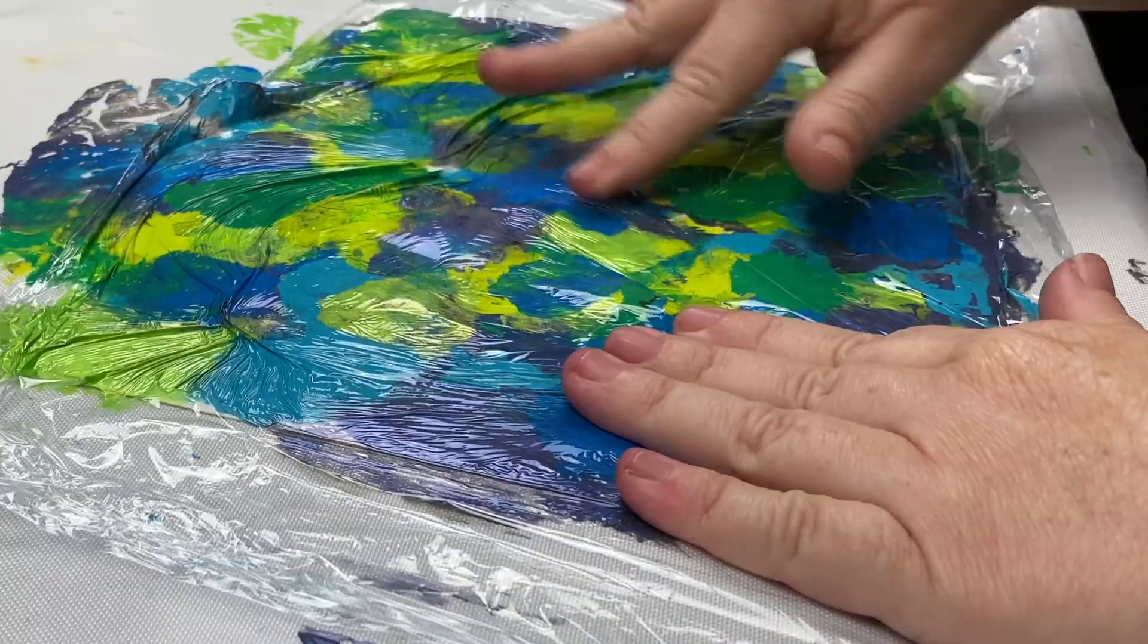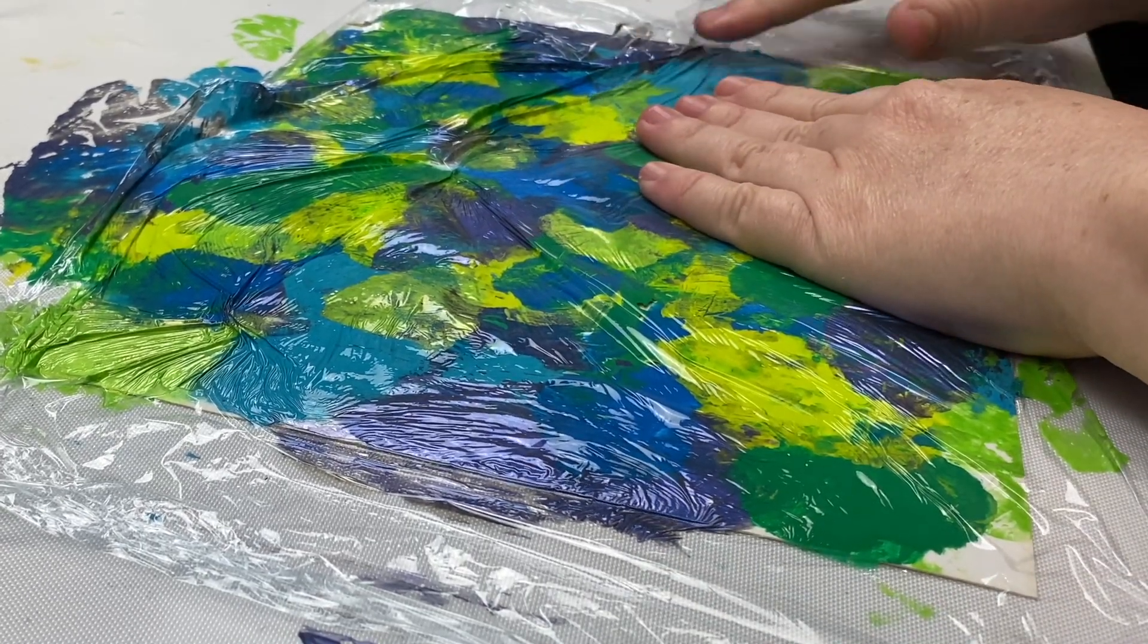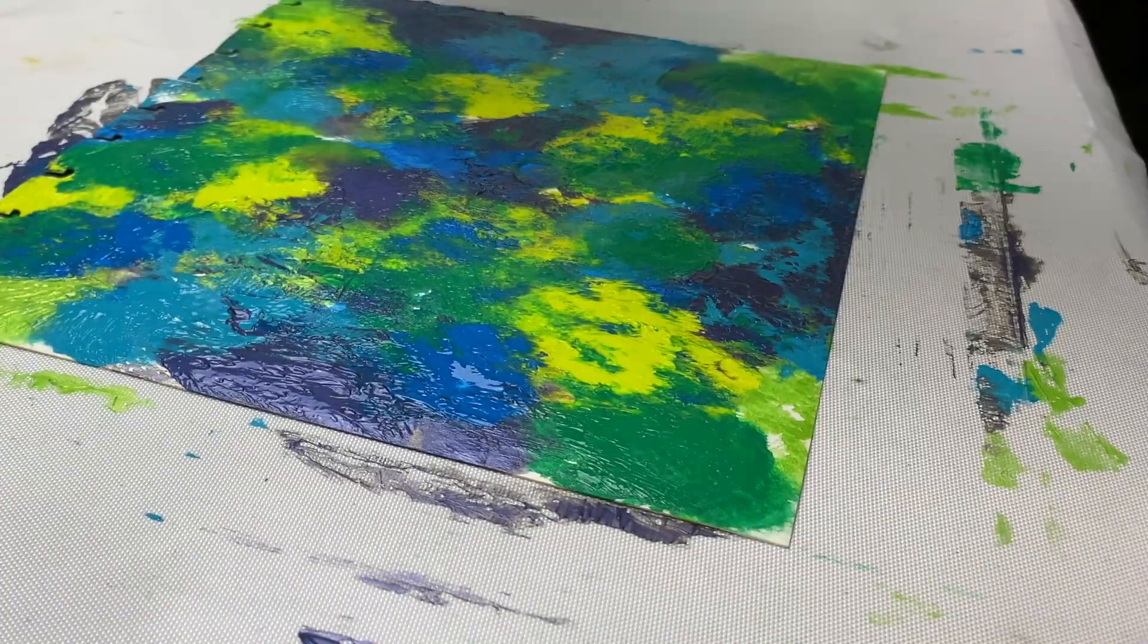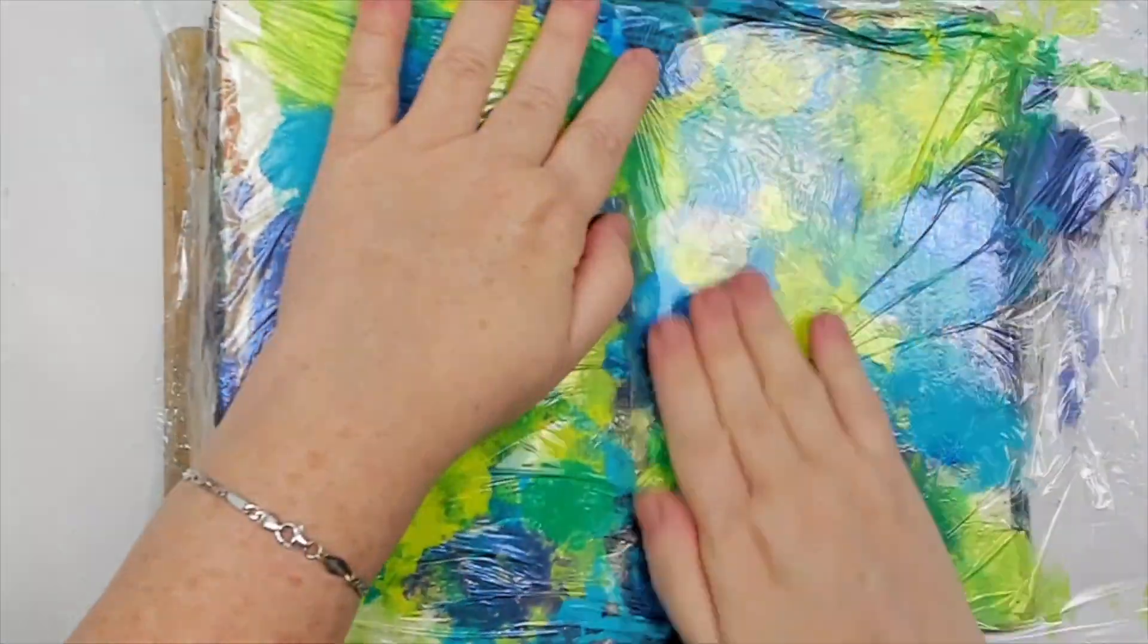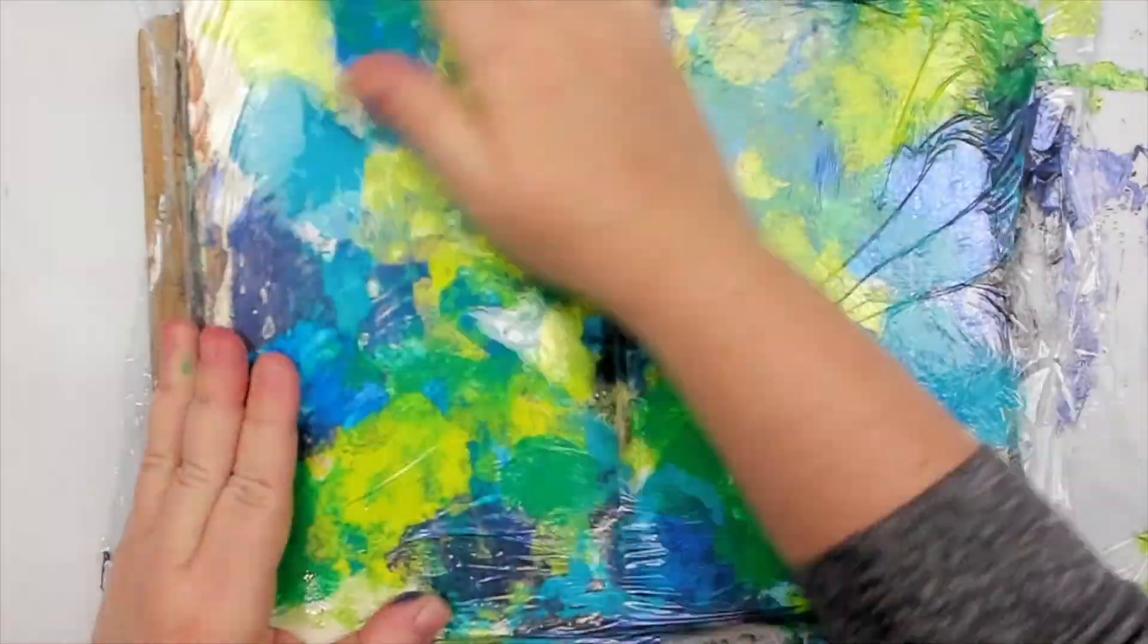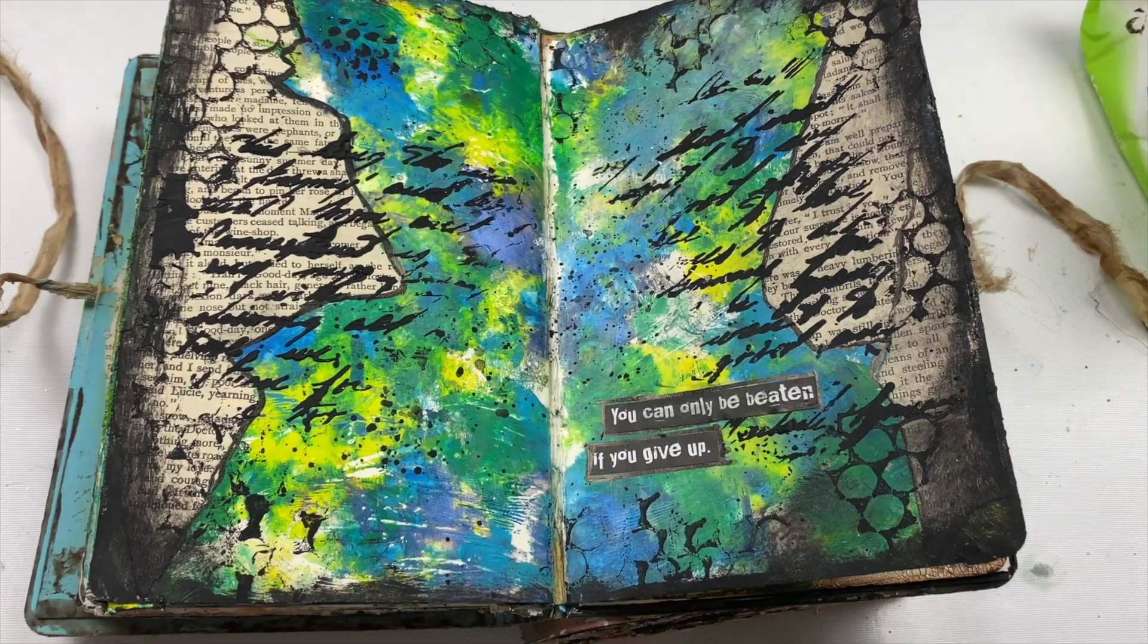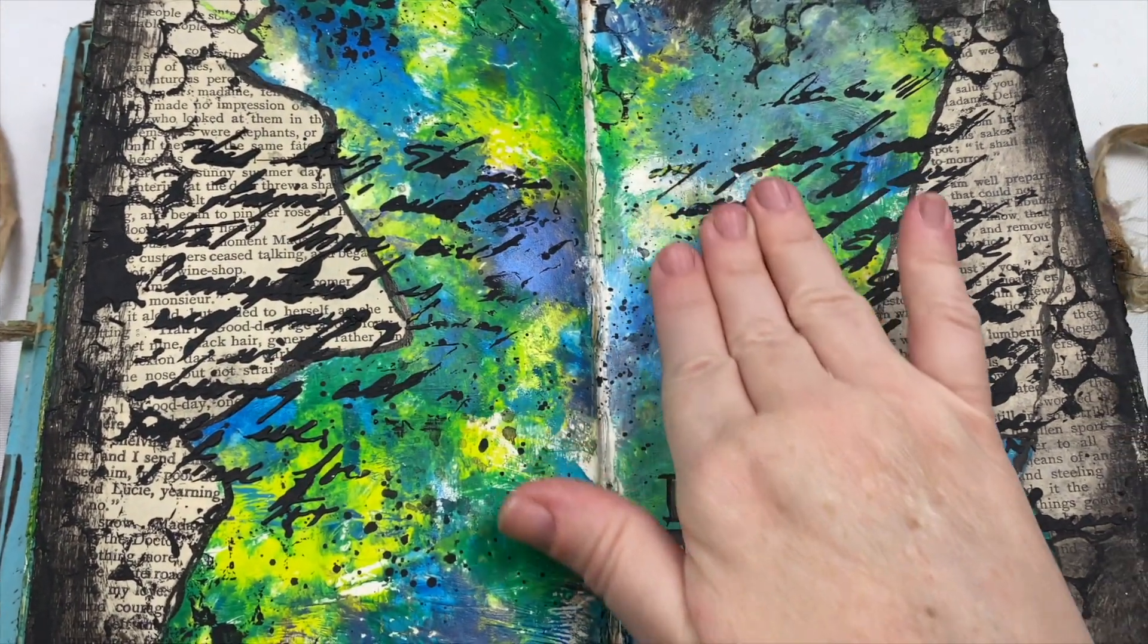Once you're done blending the whole paper, then you can just toss the saran wrap. However, I decided to take what was left over from the paint on the saran wrap and add it onto an art journal page. It was so easy. All I did is just place it on the art journal, pressed it onto the background, and then removed it. There was still so much paint on that saran wrap that it covered the whole background. And here's the art journal that I created with it. Pretty simple, but such an easy colorful background created in a few minutes.